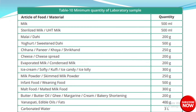Minimum quantity of laboratory sample to be analyzed: Milk and sterilized milk 500 ml; Khoya 200 g; Yogurt 500 g; Chhana 250 g; Cheese 200 g; Evaporated milk 200 g; Ice cream 300 g; Milk powder 250 g; Infant food or weaning food 500 g; Malt food/malted milk food 300 g; Butter/butter oil 200 g; Vanaspati/edible oil fats 400 g; Carbonated water 3 L.